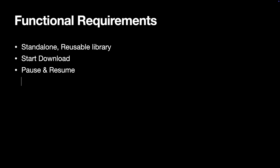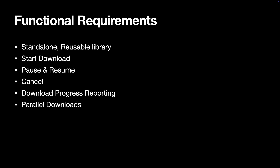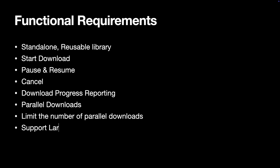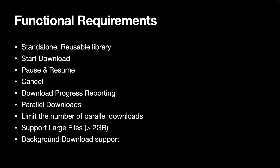We also need to cancel a download in progress and make sure any partial data on disk gets cleaned up. Another key feature is progress reporting — our library should provide a callback with a download percentage, so the client can show a progress bar or similar UI. We also need to support parallel downloads of multiple files with the ability to limit how many run at once. Ideally, the number of maximum parallel downloads should be configurable. We should support large files over 2GB, which can be tricky due to memory limits, so we need to stream them to disk in small chunks. We also need to support background downloads, which will be addressed at the end of the video.